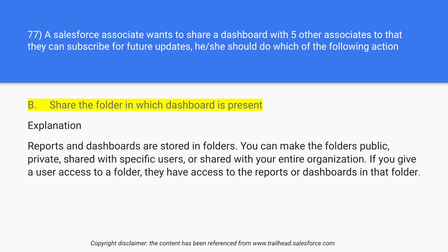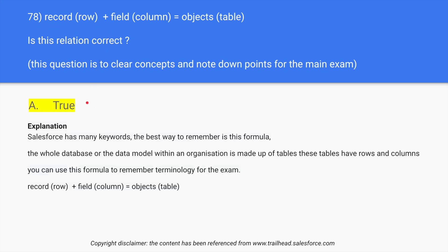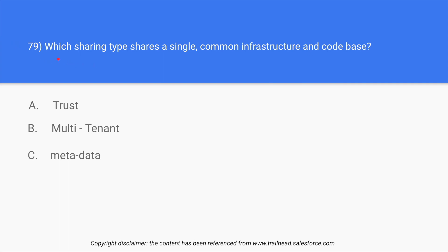It's just like Google Drive. Moving to Question 78: I created this question to help you understand the difference between a record, a field, and an object. A table is made up of rows and columns. In Salesforce, a table is known as an object, a column is known as a field, and a row is known as a record — so this relation is true. Question 79: Which sharing type shares a single common infrastructure and code base? The answer is multi-tenant.